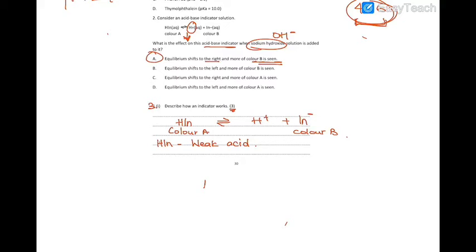In an alkaline solution, the amount of H⁺ decreases because H⁺ reacts with OH⁻. Therefore, the equilibrium shifts to replenish the H⁺, shifting to the right, so we see color B. When in an acidic solution, there is a lot of H⁺, so the equilibrium shifts to the left to decrease H⁺, and we see color A.